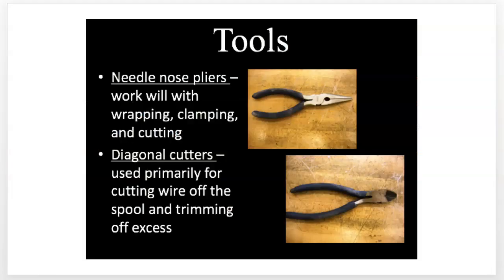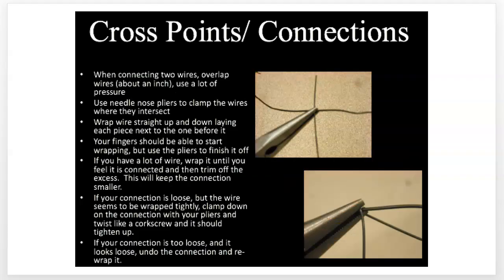What are you going to use for your tools? Basically all you need is a pair of pliers that have a side cutter on them. If you don't have those, you'll need diagonal cutters to cut the wire, and then regular pliers. I recommend something with a little finer point, like needle nose, because you can get more detail in your work. You're going to want to think a lot about how wires connect to each other — you want to create cross-connections. Don't just let wires pass by each other; the strength comes from the connection point.